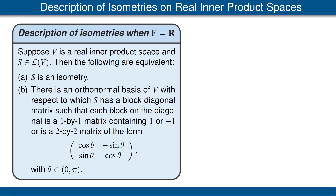In a previous video, we gave a complete description of isometries on a finite-dimensional complex inner product space. Recall that description: if we have an isometry on a complex inner product space, then there is an orthonormal basis of that space with respect to which the matrix of the isometry is a diagonal matrix, and each entry on the diagonal is a complex number with absolute value 1. That description is not true on real inner product spaces, but now we can give a complete description of isometries on real inner product spaces.